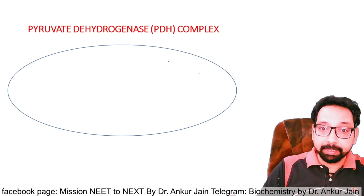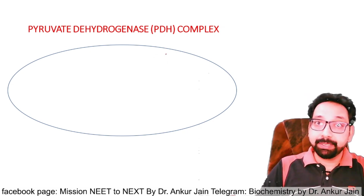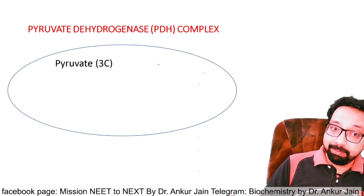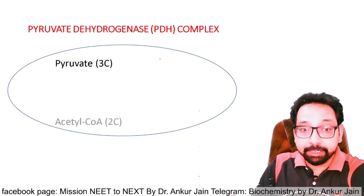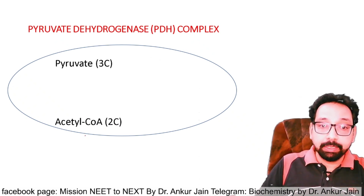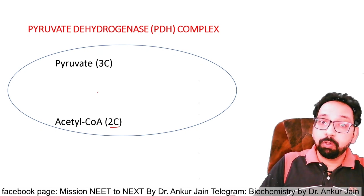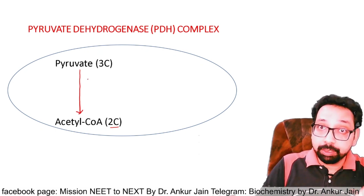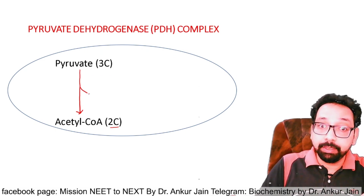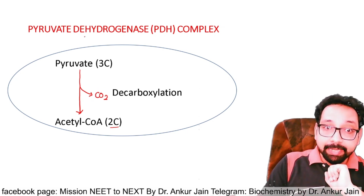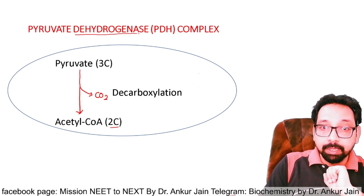The reaction catalyzed by the pyruvate dehydrogenase complex takes place in the mitochondria. This enzyme is present at the inner mitochondrial membrane. Pyruvate has three carbon atoms and is converted to acetyl coenzyme A, which has two carbon atoms. The removal of one carbon occurs in the form of CO₂, and this removal is called decarboxylation.